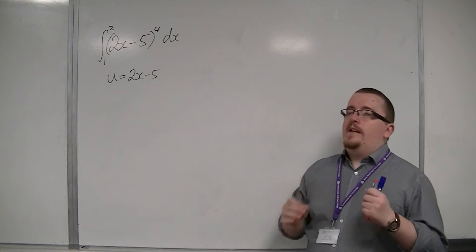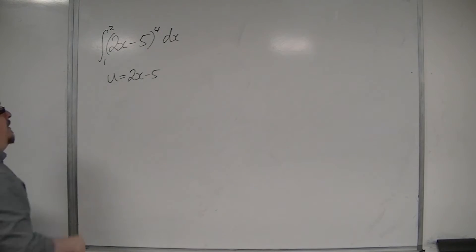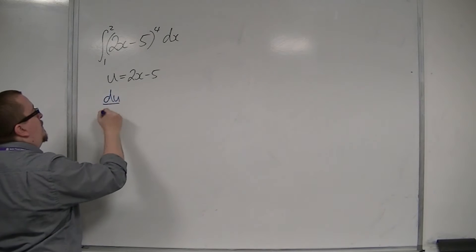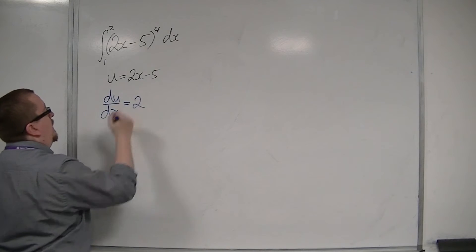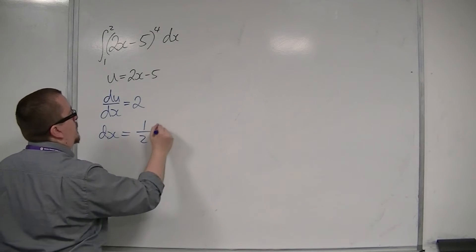So, let's see exactly where things have to change. If we're starting with u is equal to 2x minus 5, then I find du by dx first. So, du by dx would be equal to 2. Then you can rearrange that to get dx is equal to 1 half du.